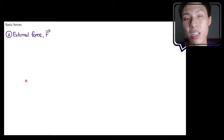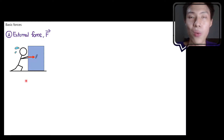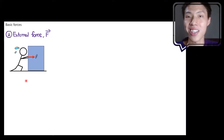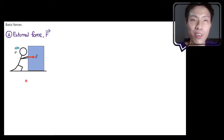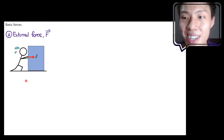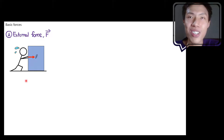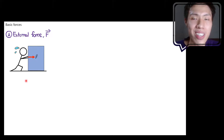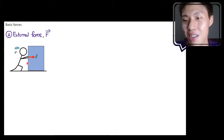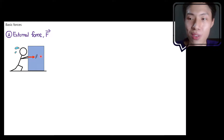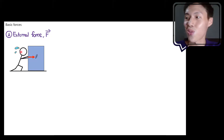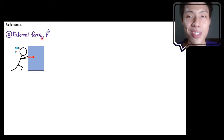Next we have external force. External force is when you can't classify the force as gravity, tension, normal force, or friction — then you classify it as external force. It's a force that is more explicitly shown in the situation. In this case, you can see a human is pushing the block. You can't classify it as weight, tension, normal, or friction, so you classify it as external force — a force exerted by something external to the object.